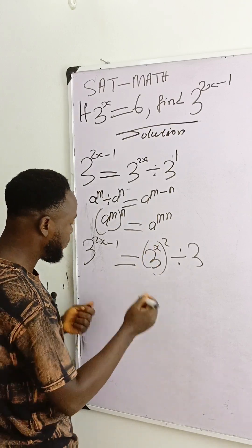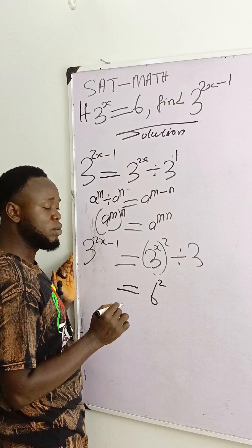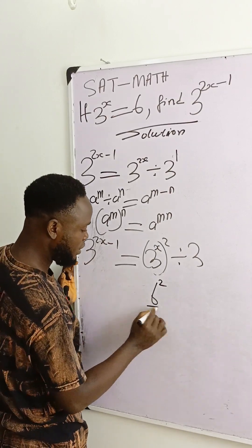So where I have 3 exponent x, I will write 6. This gives us 6 exponent 2 divided by 3.